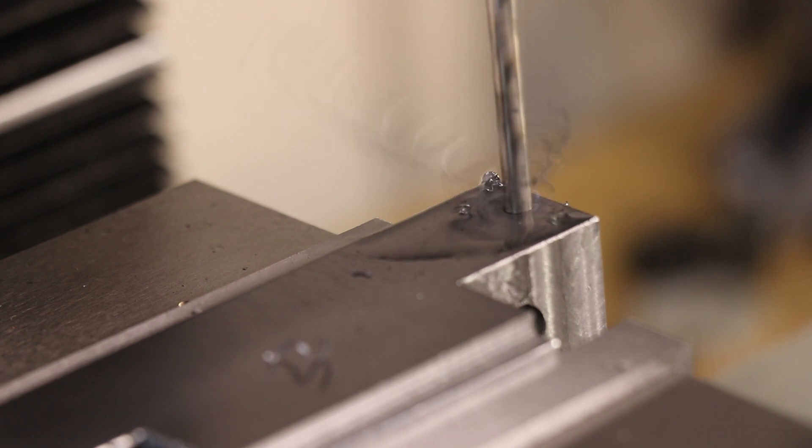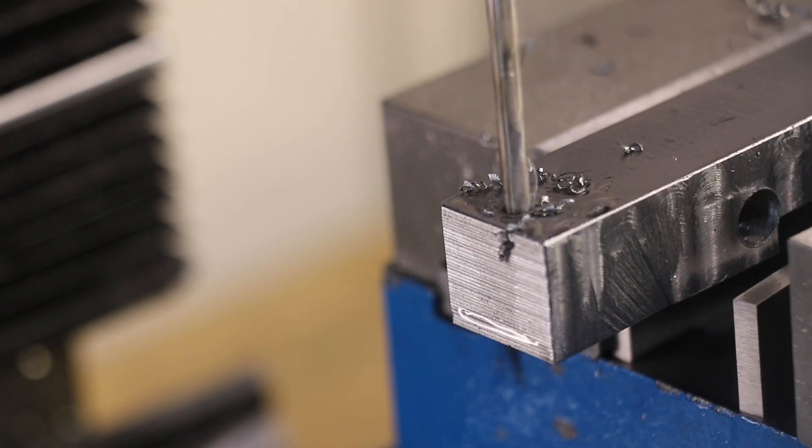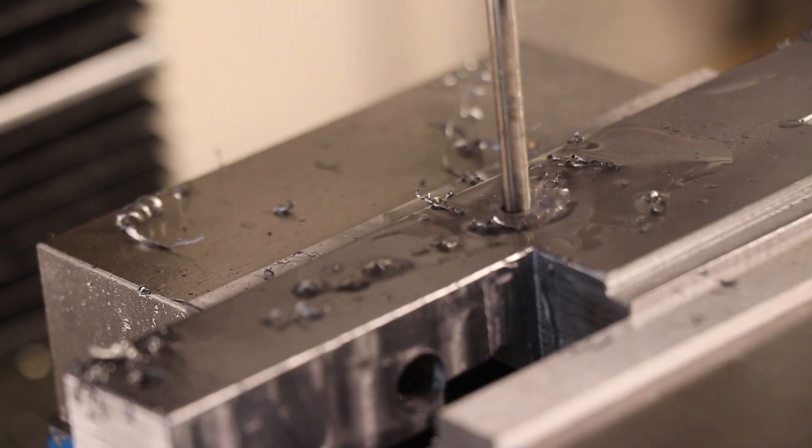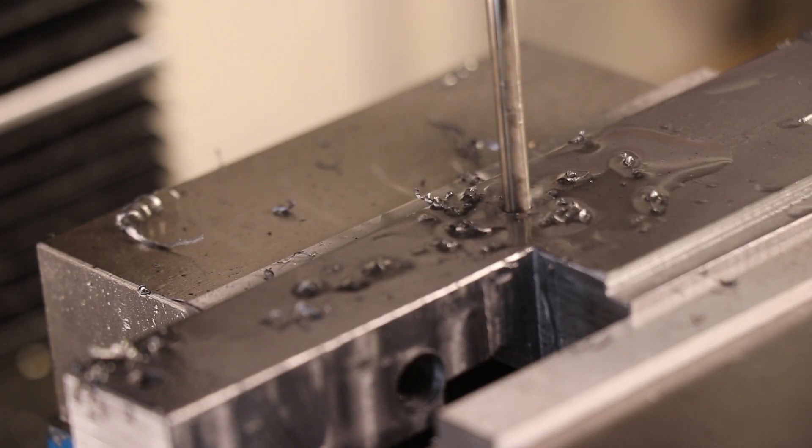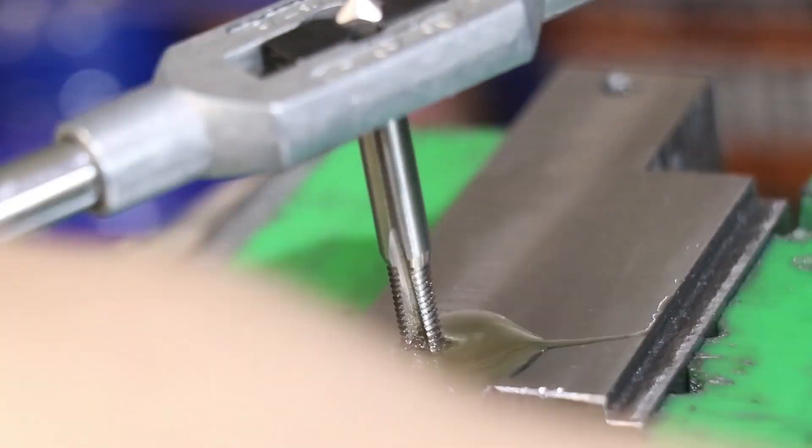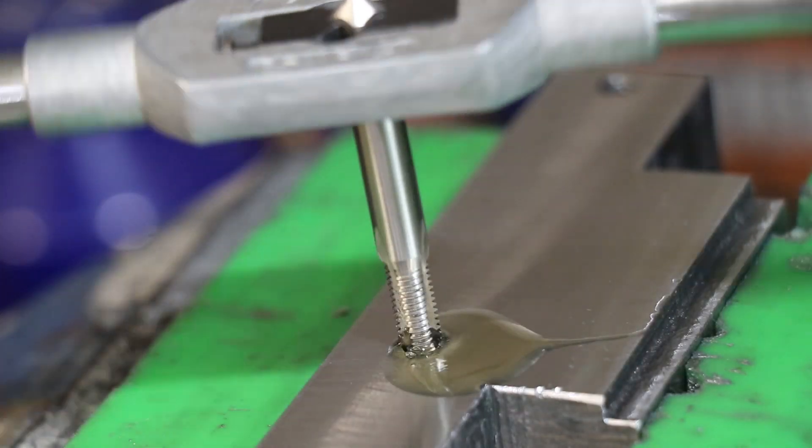The final thing left to do is drill three holes along the top edge, and I'll tap them for M5. I'll use them to hold the bracket, which will hold the way cover in place.